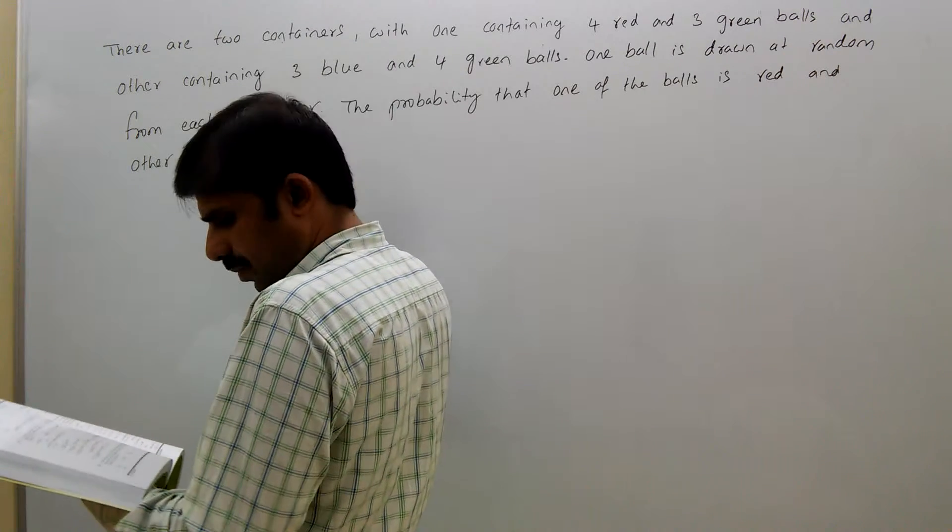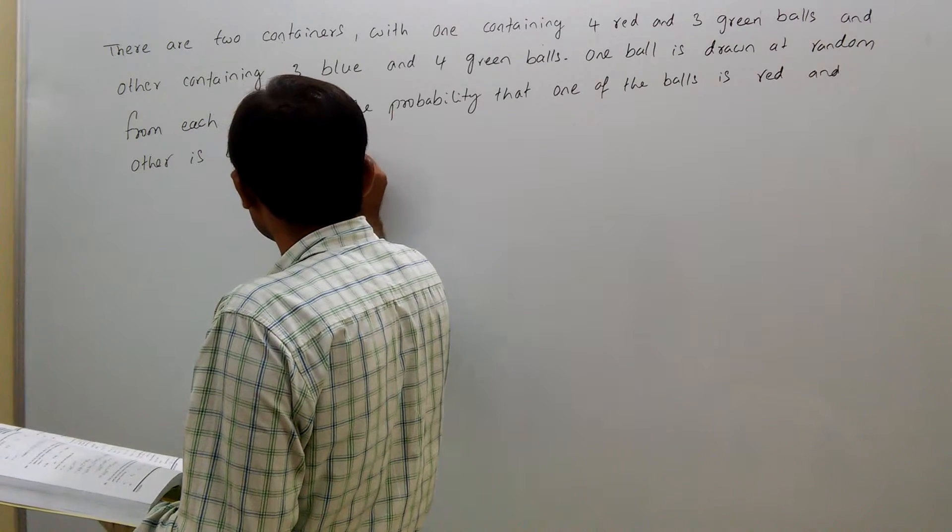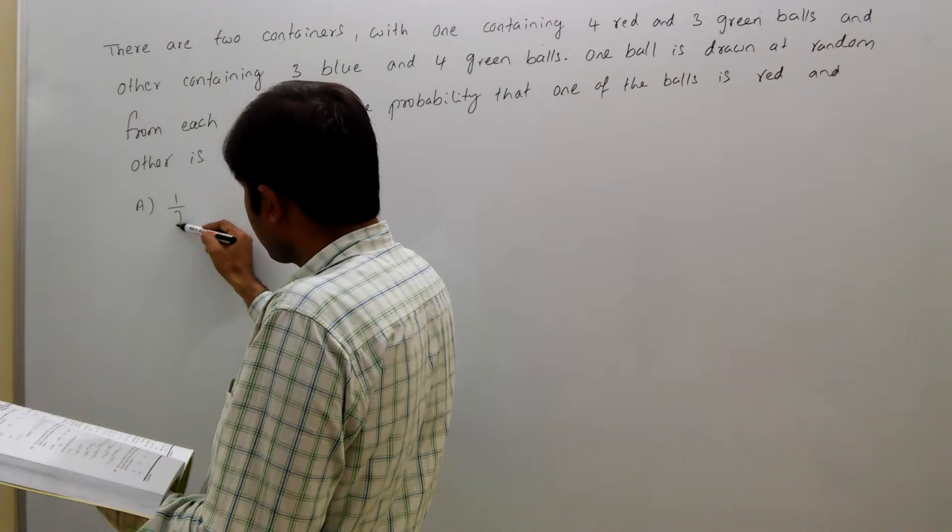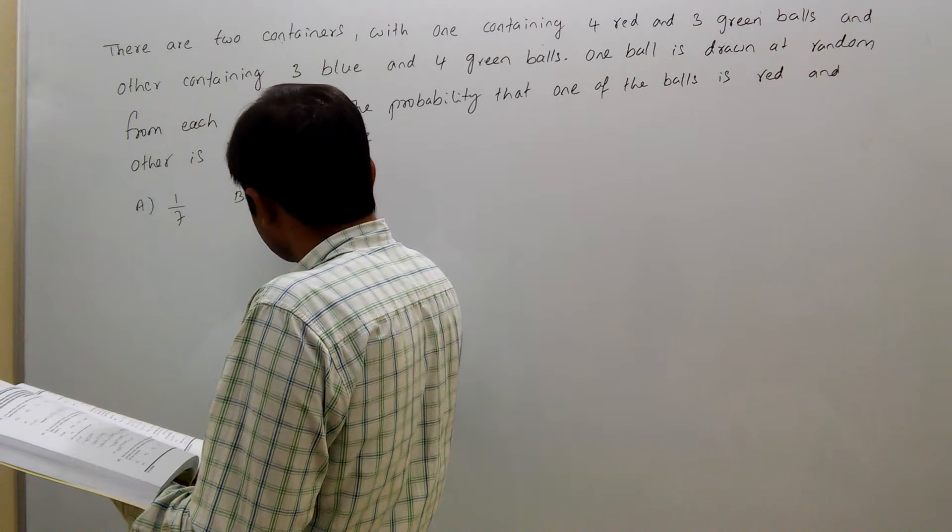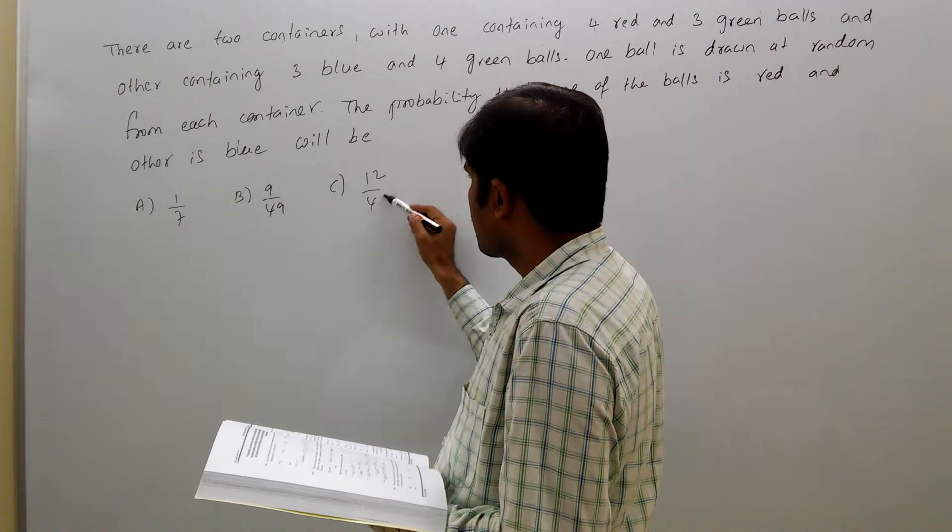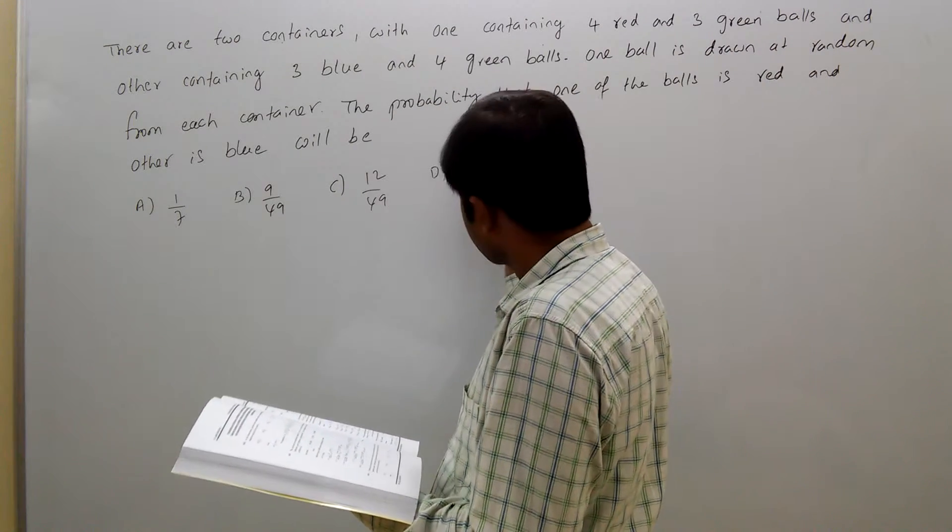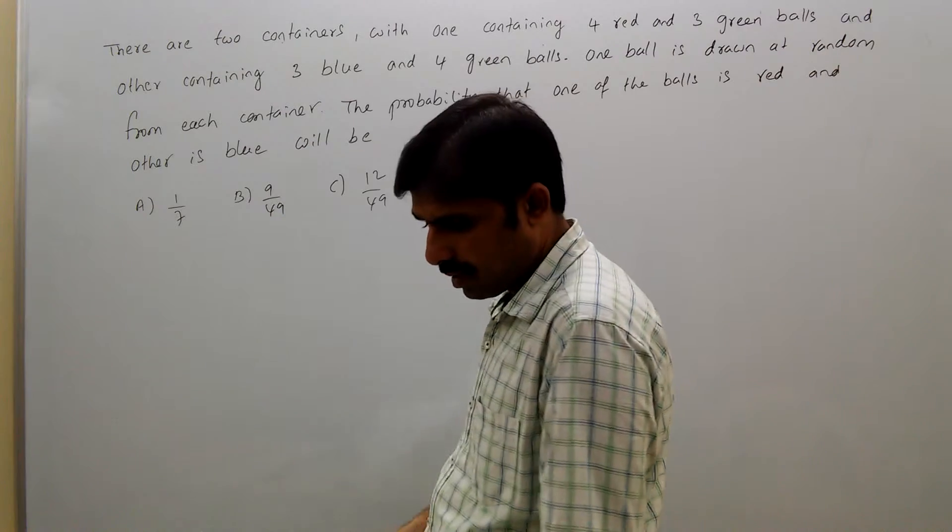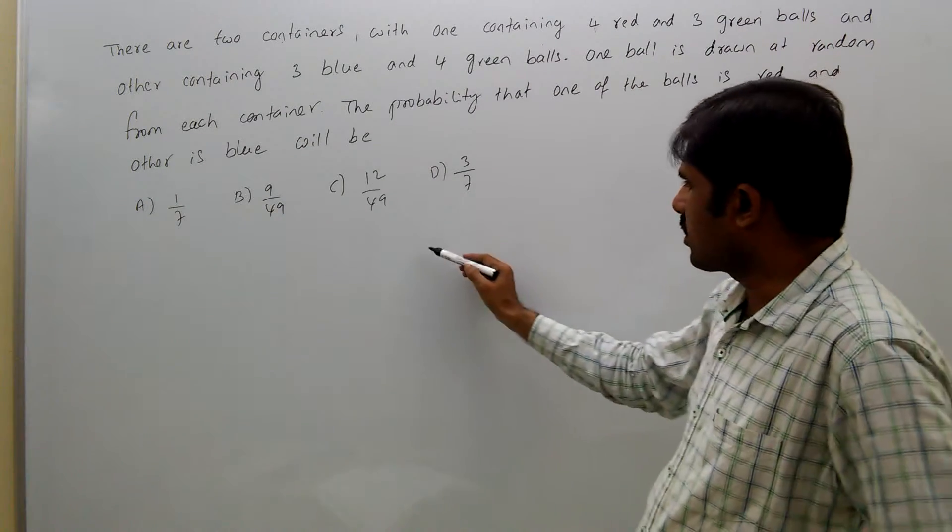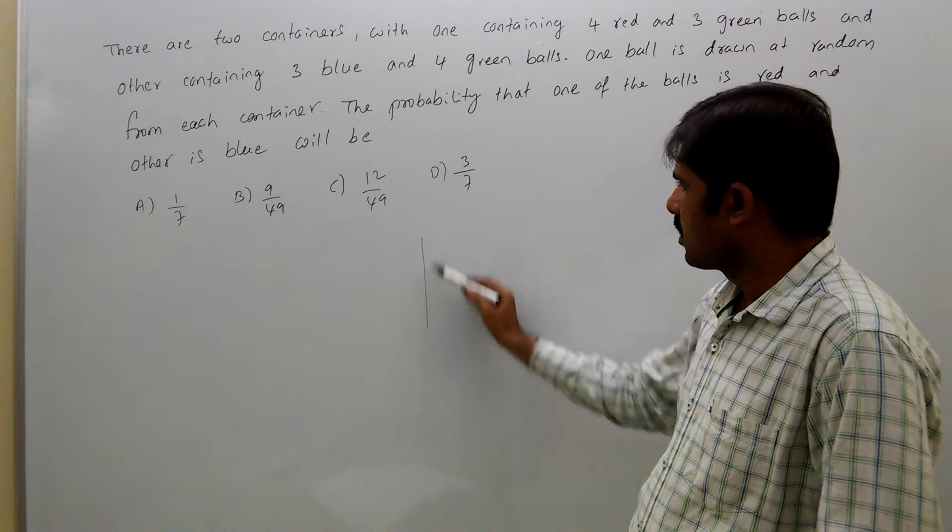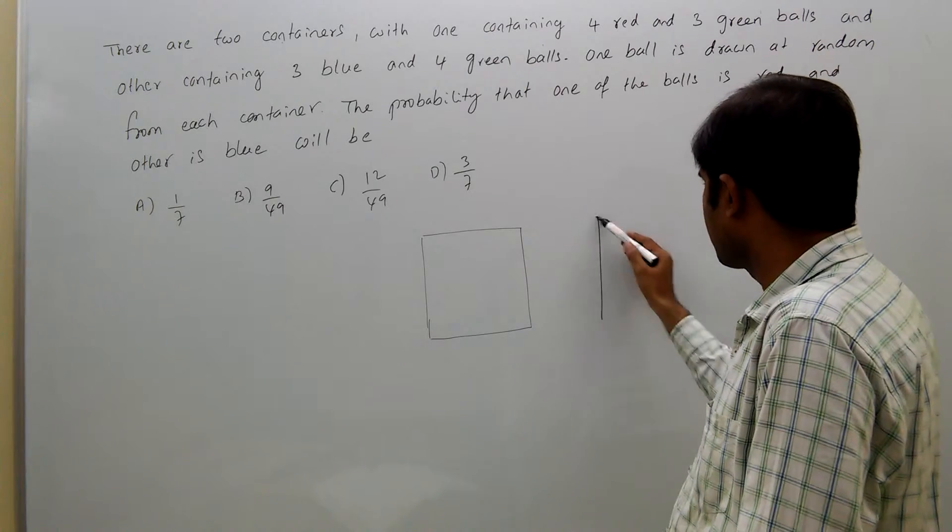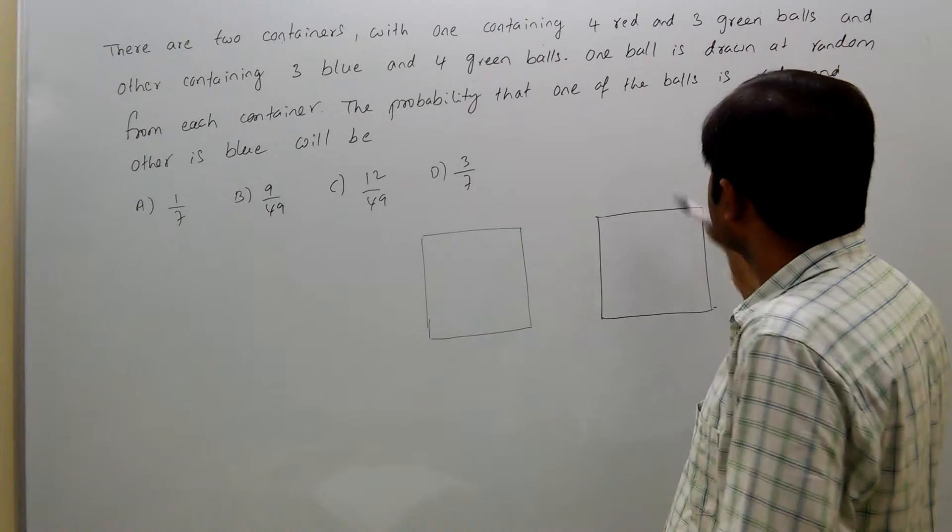Will be: option A, 1 by 7; option B, 9 by 49; option C, 12 by 49; option D, 3 by 7. According to this problem, there are two containers.